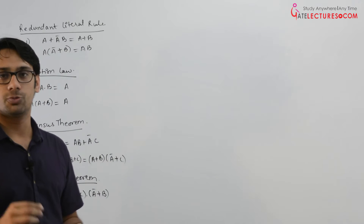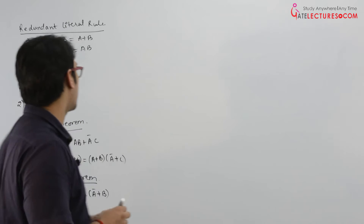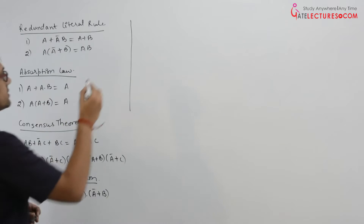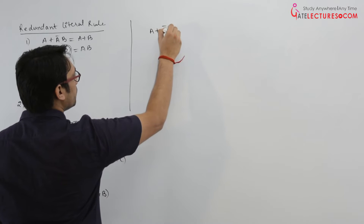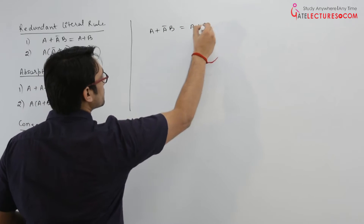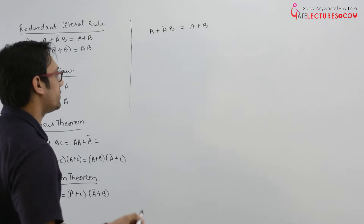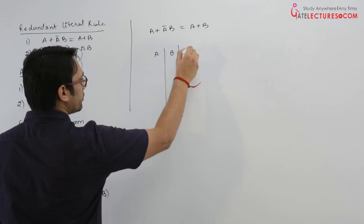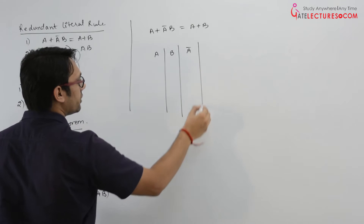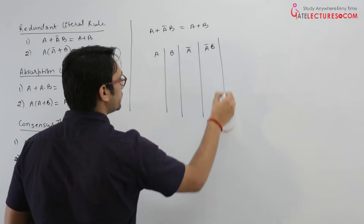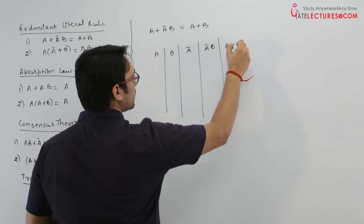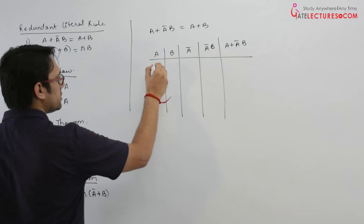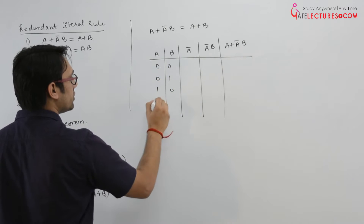What I will do is prove these theorems with the help of the truth table. The first theorem is the redundant literal rule: A plus A complement B equals A plus B. Let us make a truth table. We have A, we have B, let us find A complement, then A complement B, then A plus A complement B. The combinations are 00, 01, 10, and 11.